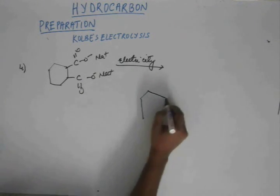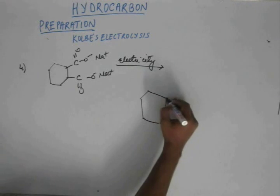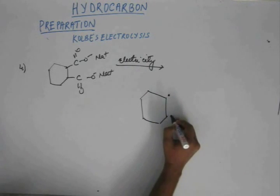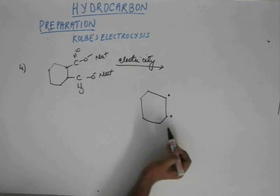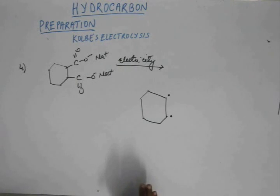So I am straight away bypassing first step and writing the intermediate of the third step. Now here you will reach after oxidation and removal of carbon dioxide gas. Now we have 2 free radicals within one molecule. Now the last step is dimerization.